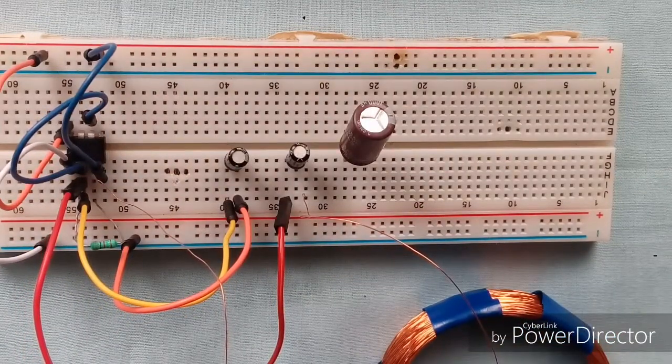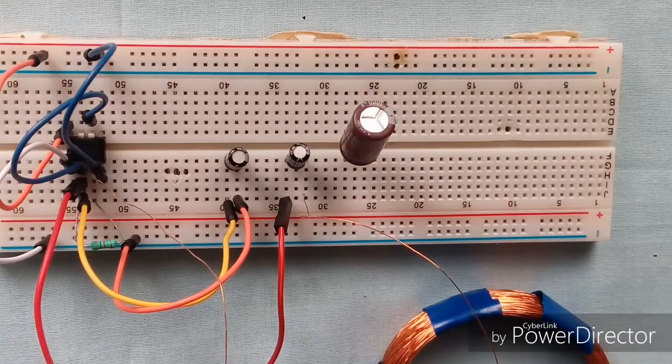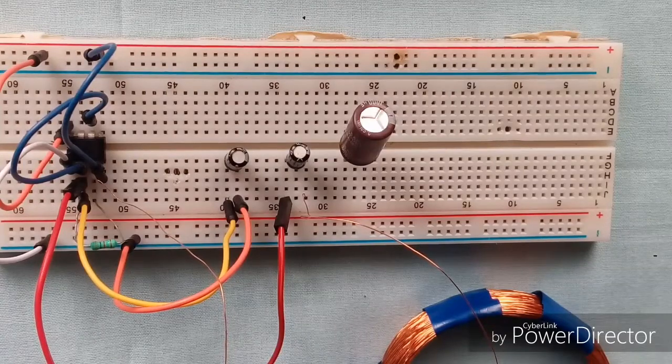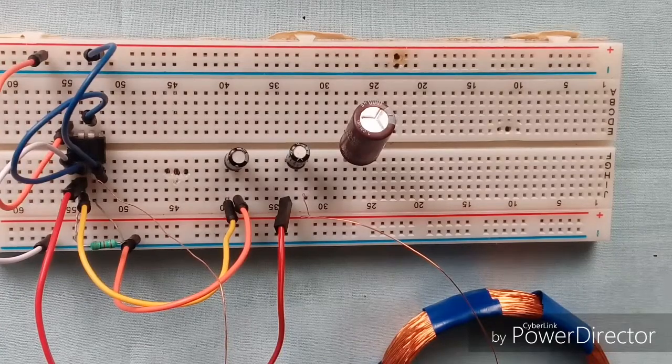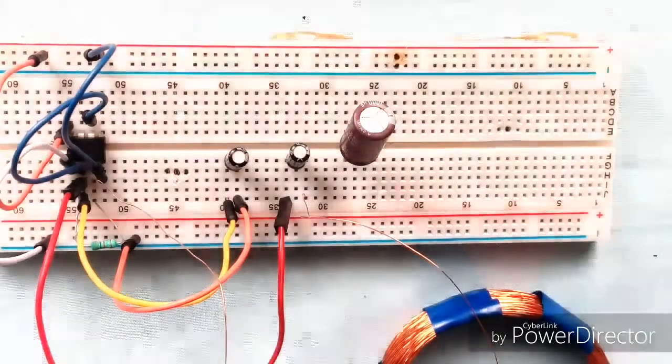One thing you need to remember: the copper wire consists of enamel coating, which means that before using it you need to remove the coating. You can do this by sandpaper or by directly burning some amount of wire. I will show you in the next moment.